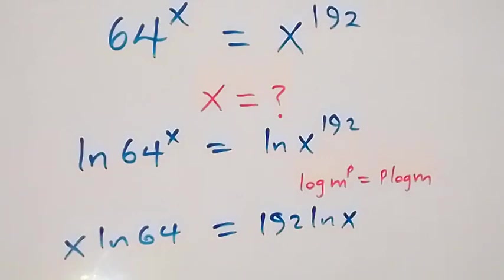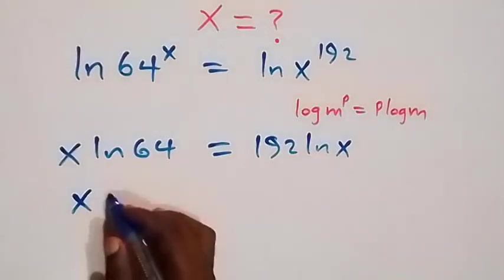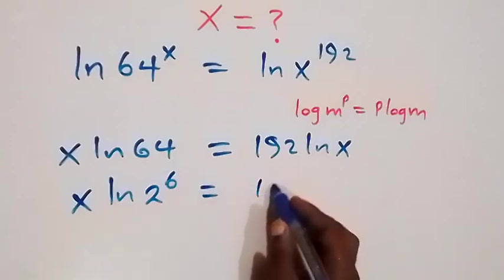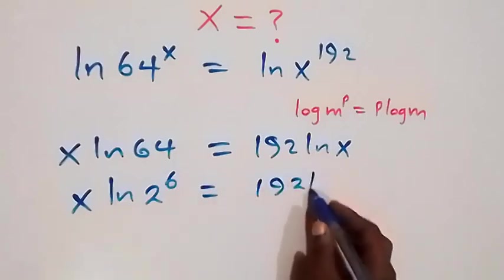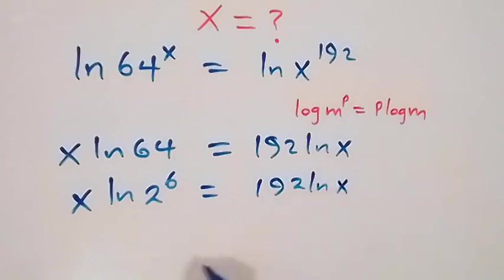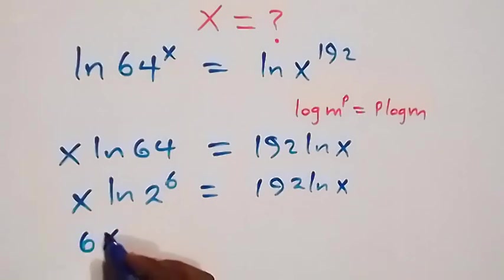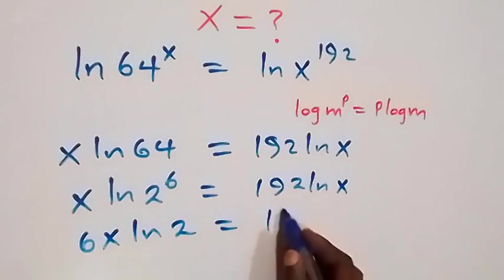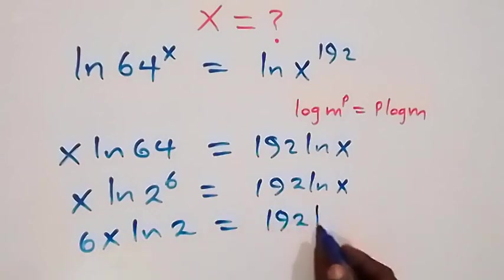From what we have here, we can write 64 as 2 raised to power 6. So we have x ln 2 raised to power 6 equals to 192 ln x. And taking the 6 out, it becomes 6x ln 2 now equals to 192 ln x.